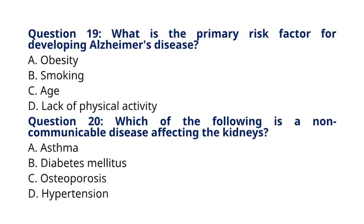Question 19: What is the primary risk factor for developing Alzheimer's disease? A. Obesity, B. Smoking, C. Age, D. Lack of physical activity. The correct answer is option C, Age. Explanation: Age is the primary risk factor for developing Alzheimer's disease, a progressive neurodegenerative disorder that affects memory, cognition, and behavior.